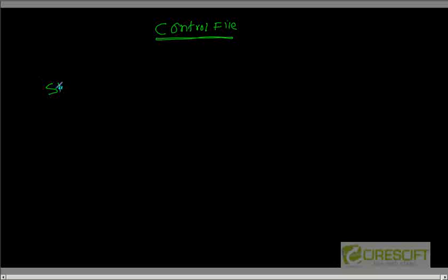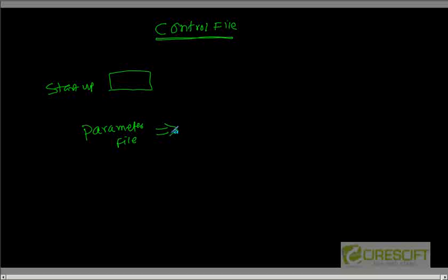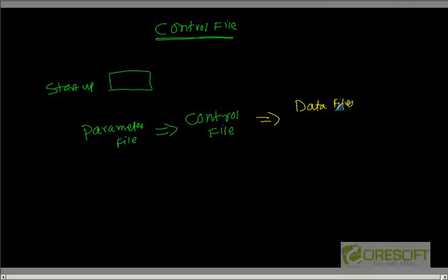Whenever we are going to start a database, we say startup and then give spfile equal to some init.ora. In that init.ora parameter file, we point to the location where the control file is. So basically, the parameter file tells where your control file is, and then the control file tells where your data files and redo log files are. That is how the Oracle database knows which data files and redo log files to open.